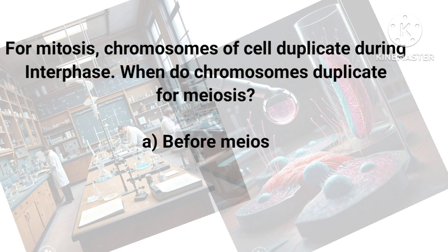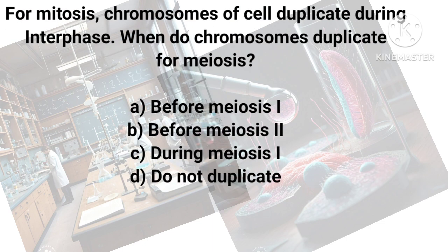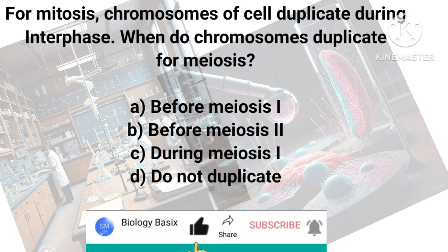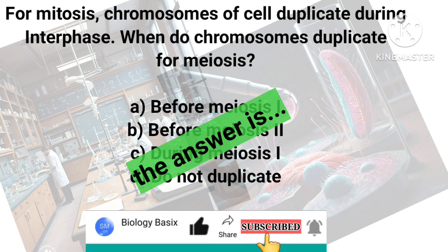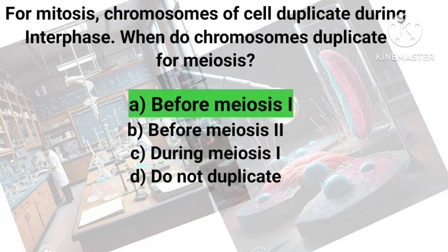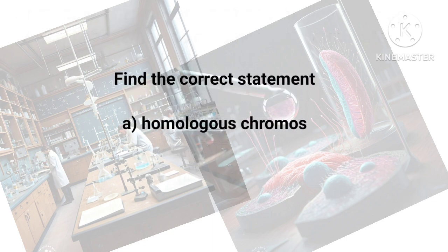For mitosis, chromosomes duplicate during interphase. When do chromosomes duplicate for meiosis? The answer is that they duplicate before meiosis one.